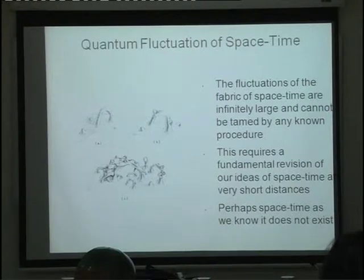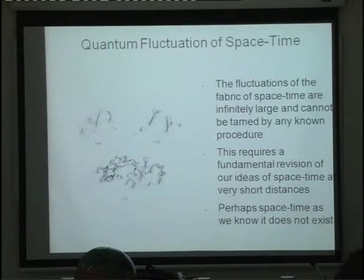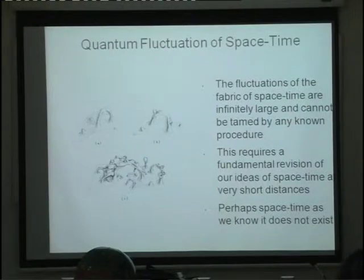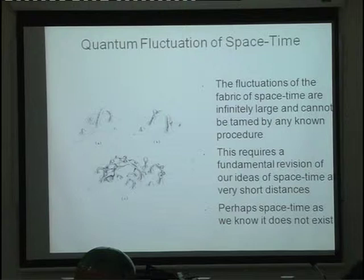It turns out that these fluctuations cannot be controlled in a mathematically precise way, and that is why the general theory of relativity really breaks down. It's not just that you have to incorporate this stuff — it's simply wrong, it doesn't work, because it gives you infinite answers.